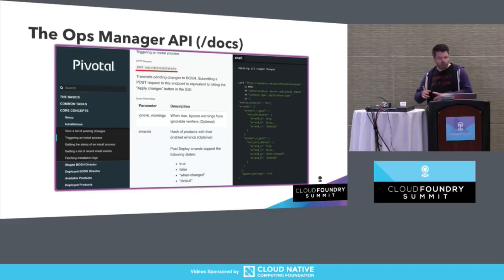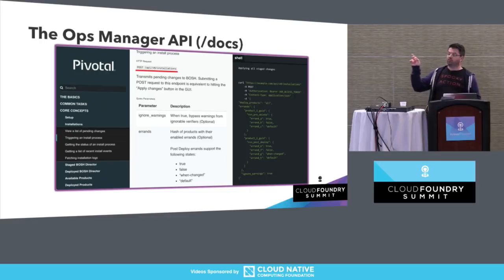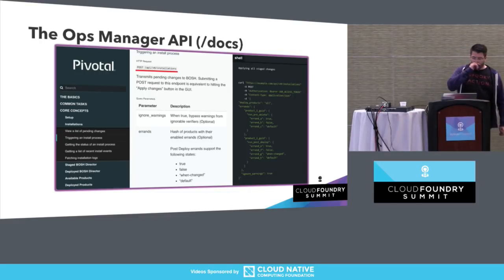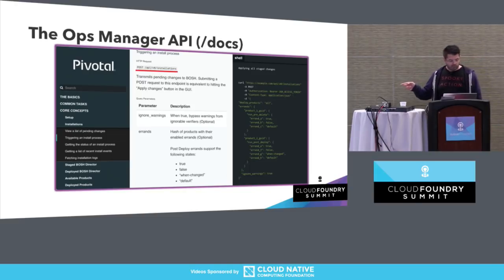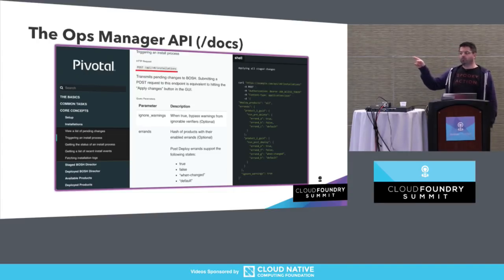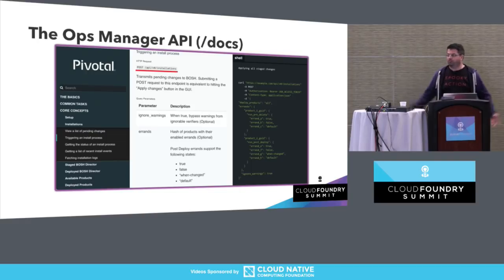CLIs might be able to help us. If you take a look at this screenshot from the first page of the Ops Manager API, accessible at /docs, we're looking at a POST method for /api/v0/installations. This endpoint represents the Apply Changes button — if you send a POST message to this endpoint, it will effectively click that button for you.